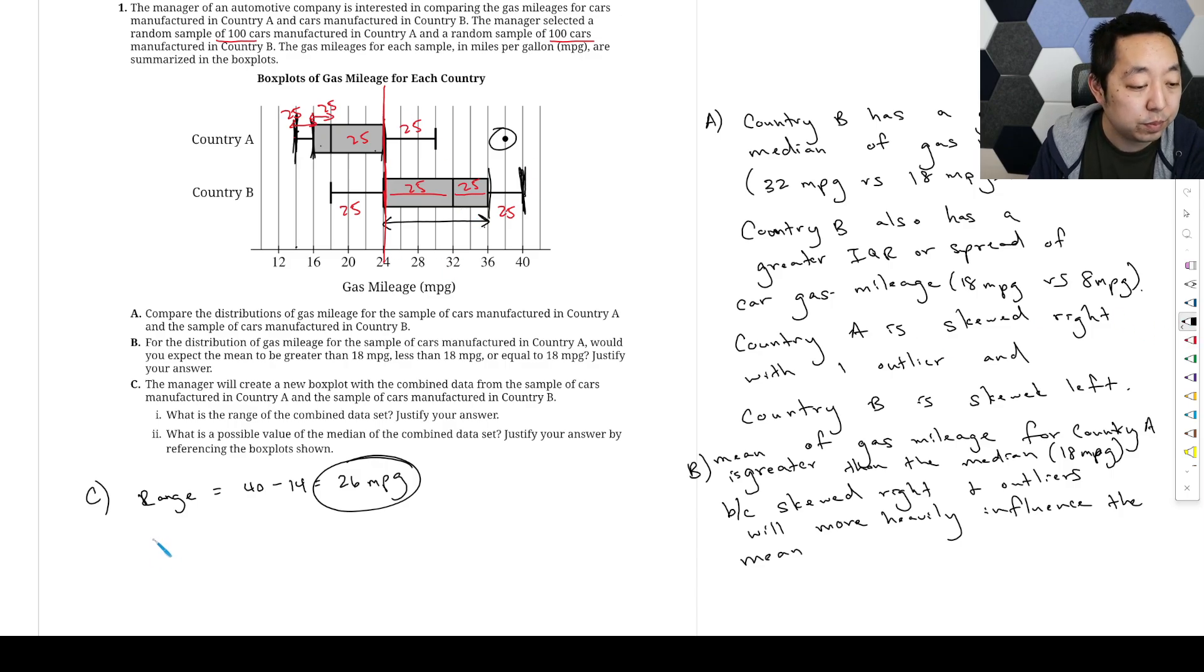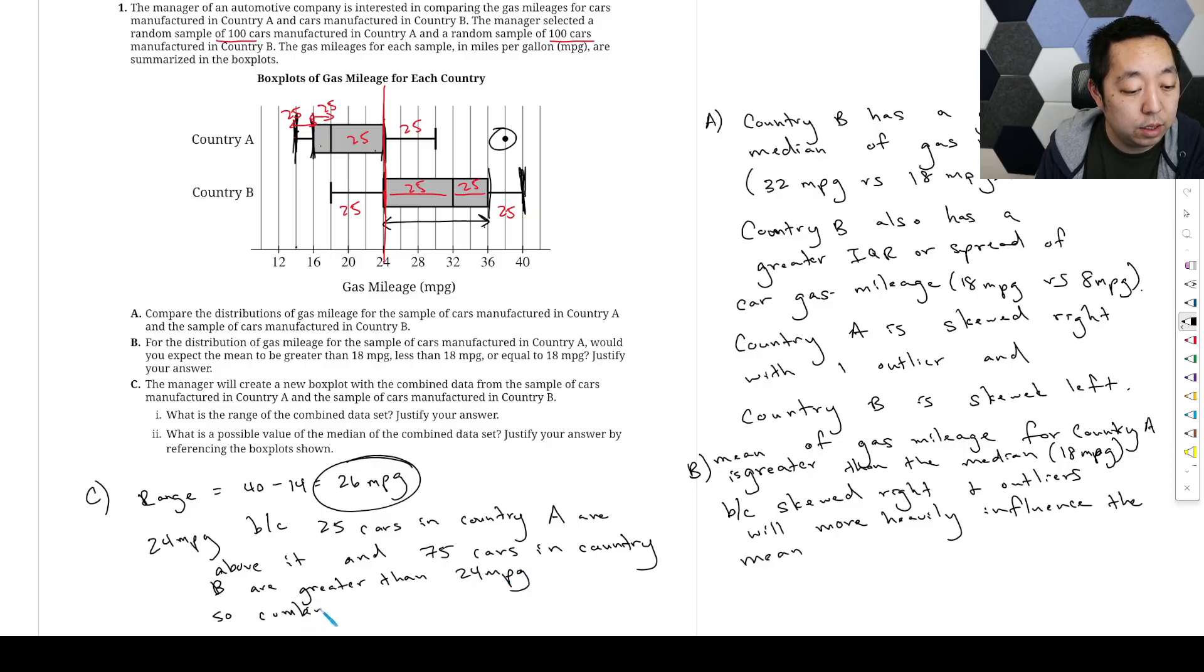So then, about 24 MPG, because you would have 25 cars in country A are above it. And 75 cars in country B are greater than 24 MPG. So combined 100 cars, which is half the data set, half of the new data set are above 24 MPG. Okay. Just like that.